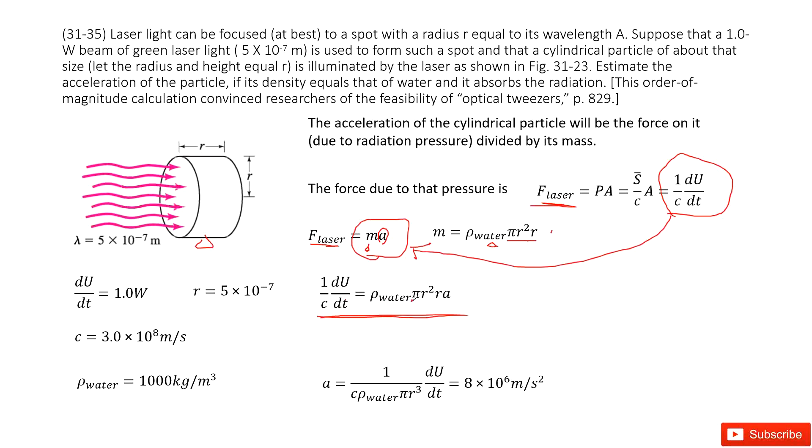From this equation, you can get the function for a, the acceleration. Now we see which quantities are given: dU/dt is given, r is given, c is a constant, and the density for water is also given. So we input all the given quantities and we get the answer. Thank you.